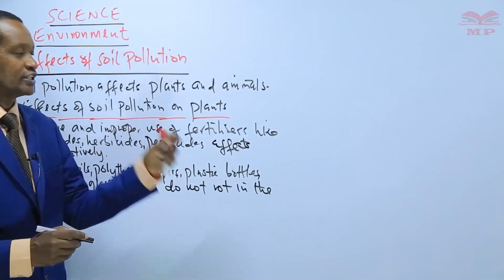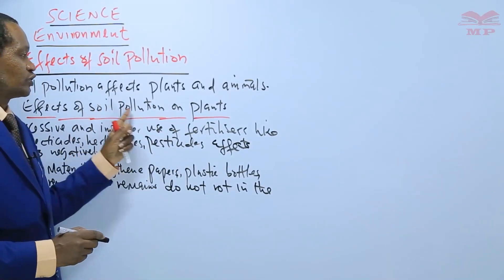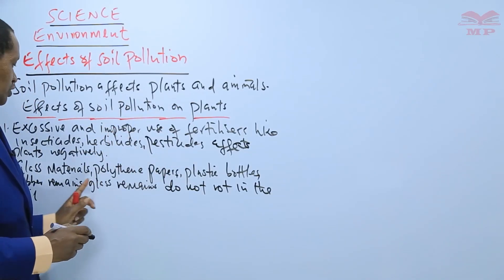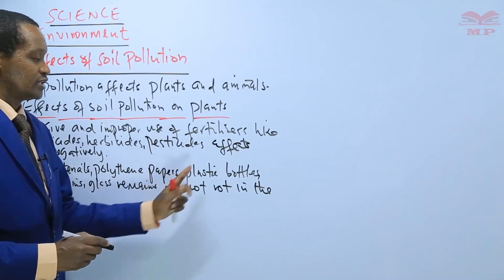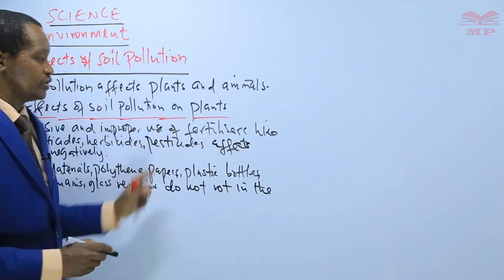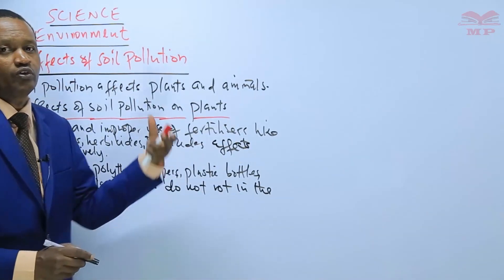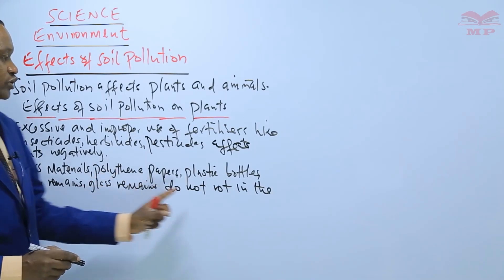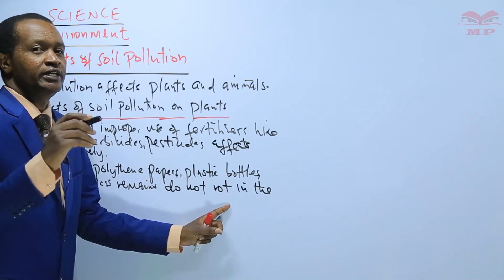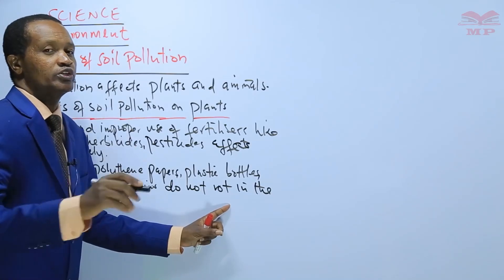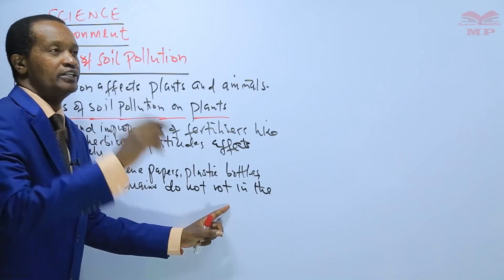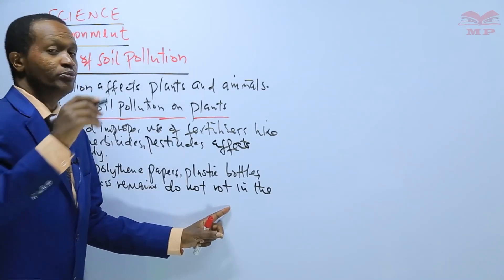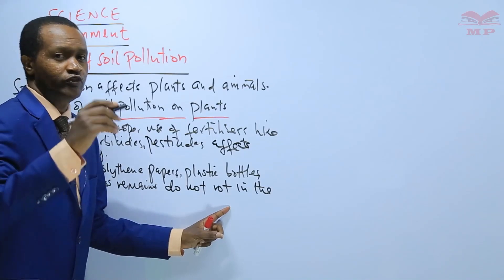We are discussing the effects of soil pollution on plants. Soil pollution means throwing glass materials, papers, and plastic bottles into the soil — when you pollute the soil with these materials you are obstructing the growth of plants. They do not rot in the soil; they remain in the soil for a long period of time and sometimes obstruct the growth of plant roots.